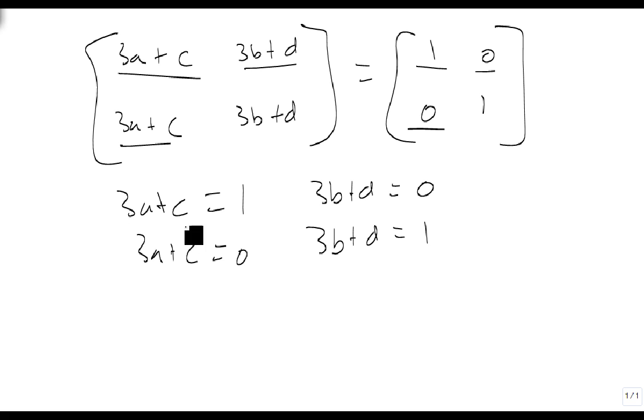And notice that if I use elimination, because I have four equations with four unknowns, but they split very nicely into 2 and 2. If I use elimination, if I just subtract this one from this one, I get 0 equals 1, which is always false. And the same thing happens here. 0 equals 1, which is always false. And so these both come up as contradictions.